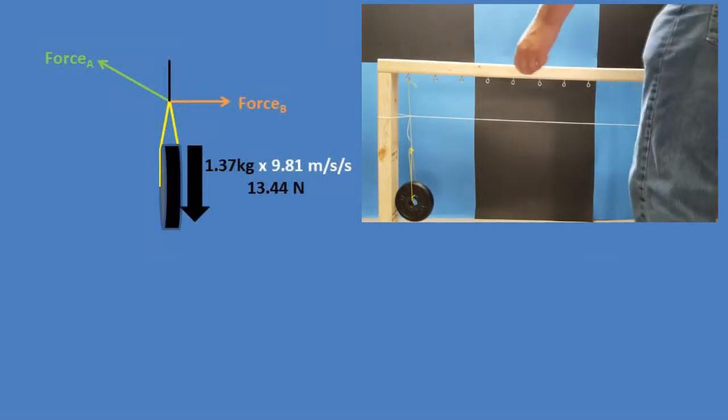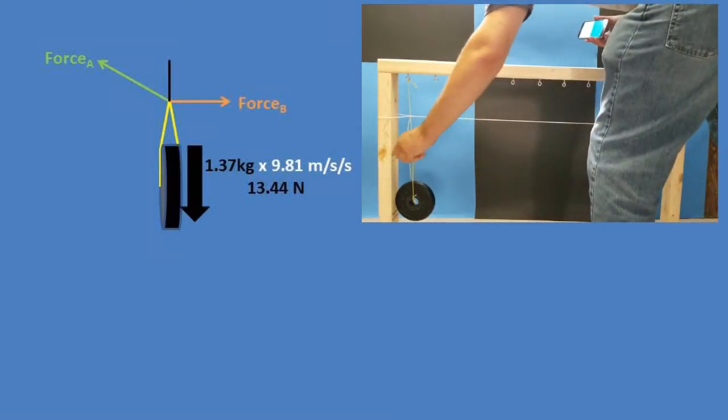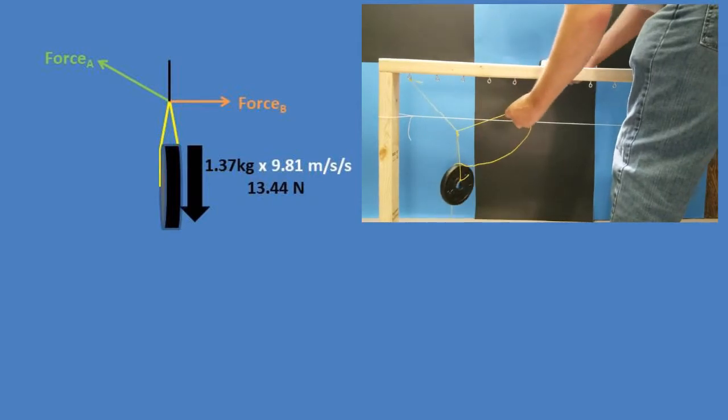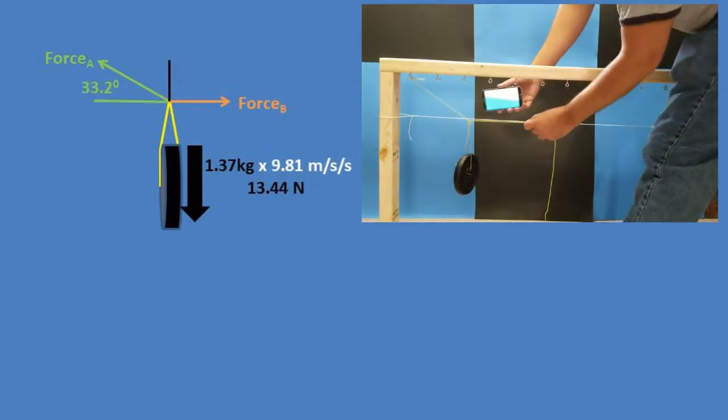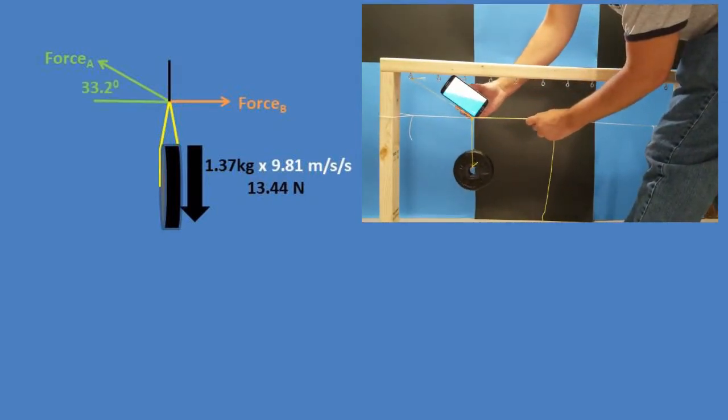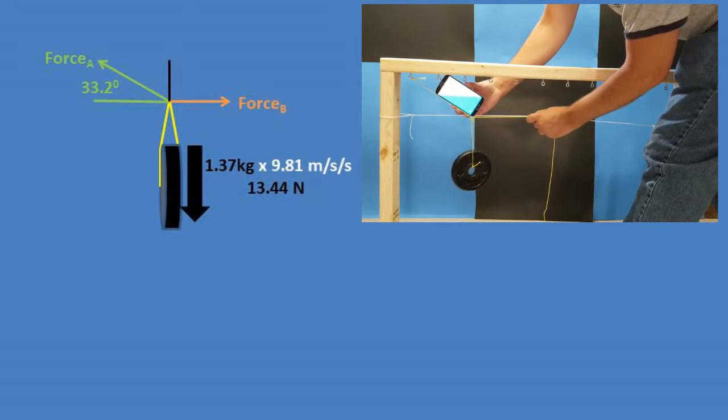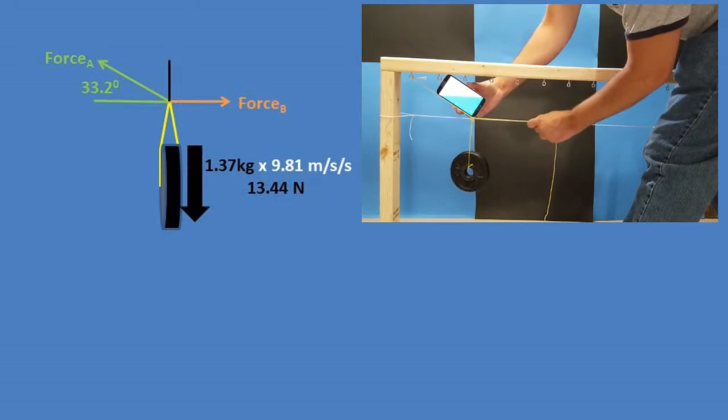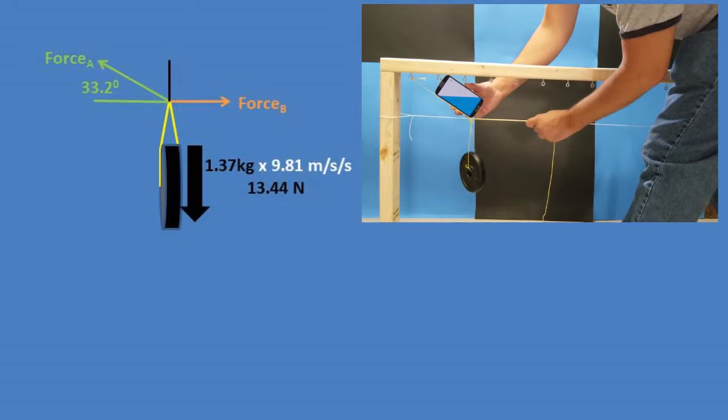In this problem, we have a mass that is hung by two ropes, and we want to find the tension of each rope. One rope is at a 33.2 degree angle above the horizontal, this will be labeled as tension force A, and the other is parallel to the ground, and this will be labeled as tension force B.